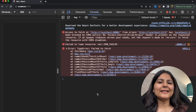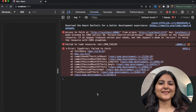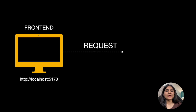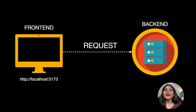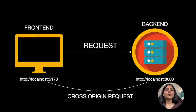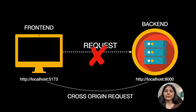Let's understand it with our specific case. Our frontend application hosted at localhost:5173 is trying to make a request to an API on the backend hosted at localhost:8000. As you can see, both origins are different, and hence this is a cross-origin request. According to the same-origin policy of browsers, resource sharing is only allowed if both have the same origin — so by default, such requests are not allowed.